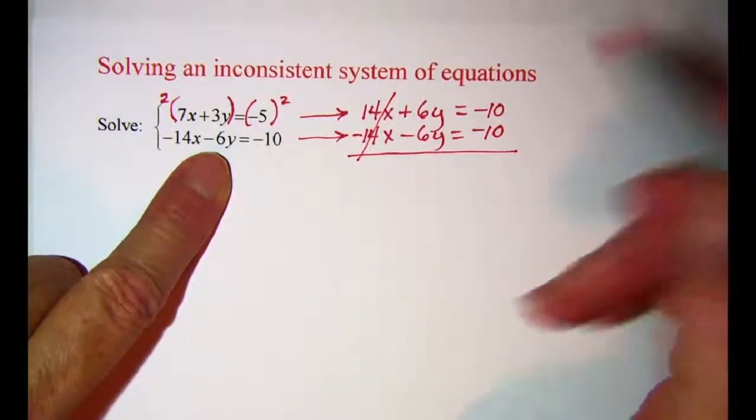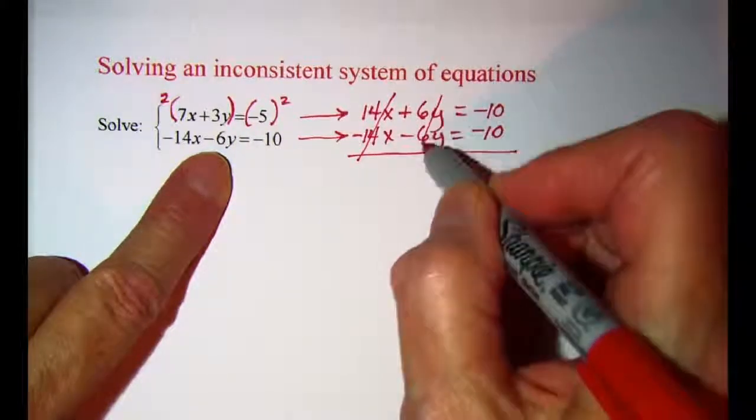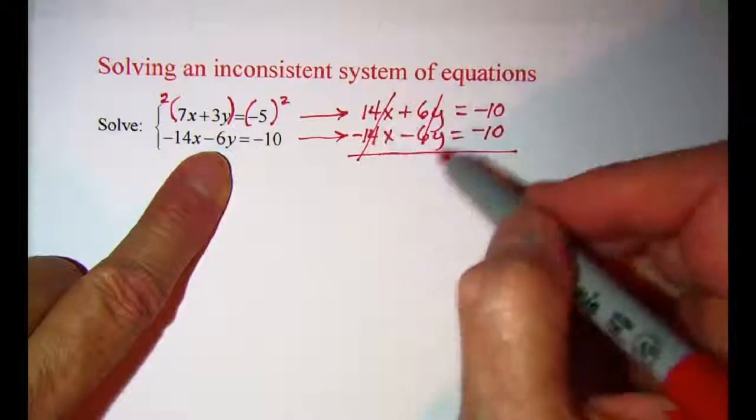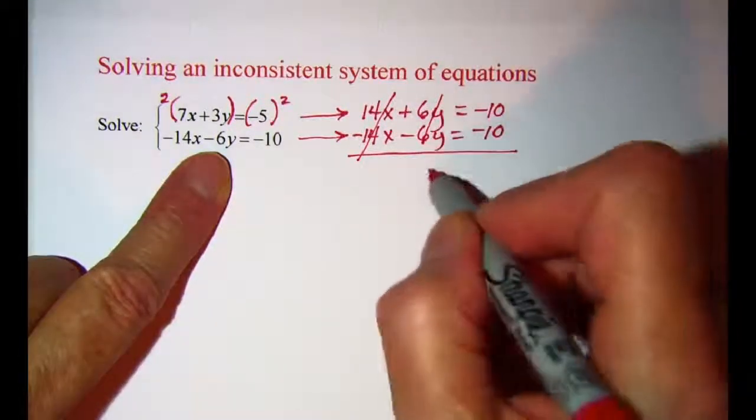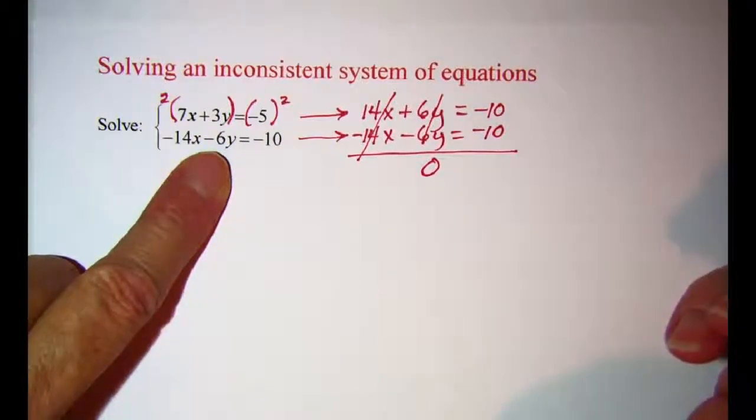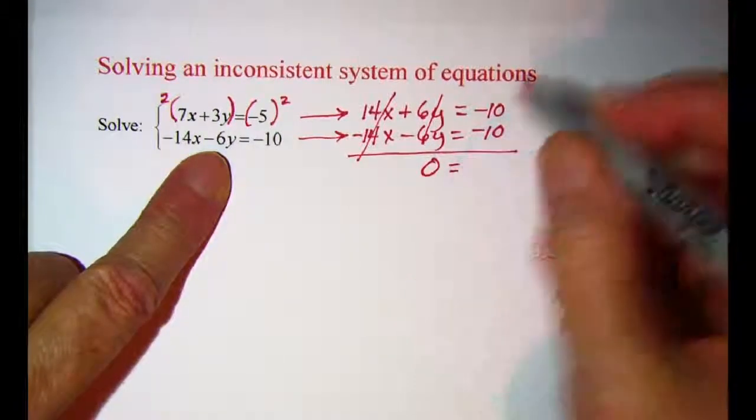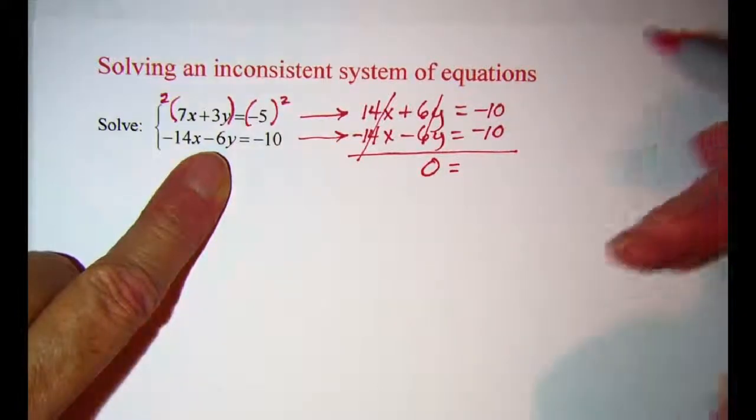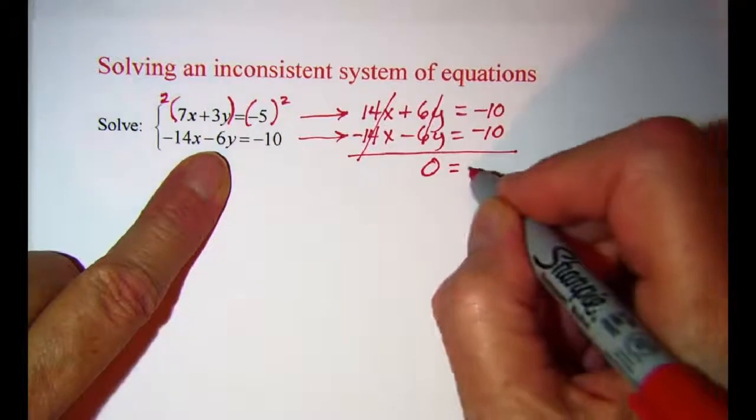Those cancel out and also 6y and negative 6y cancel out. When everything cancels out remember that you still have to write your 0 on the left hand side. On the right hand side, the sum of these two equations I have negative 10 and negative 10, that gives me negative 20.